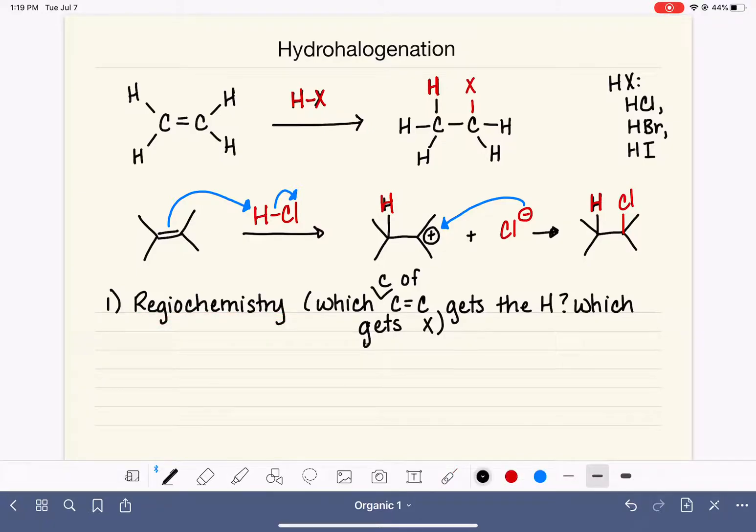We also need to consider stereochemistry. Because this reaction causes us to convert achiral carbons to potentially chiral carbons, if we make chiral carbons in our products, what is the stereochemistry of those carbons? If a chiral carbon is formed, will it be R or S?